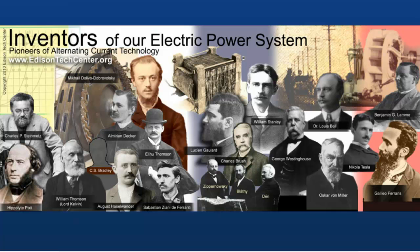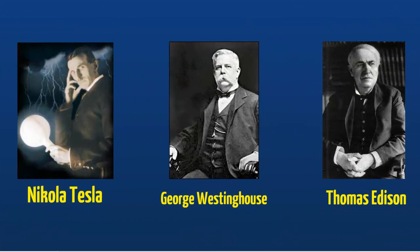Trying to detail the contributions of all these men goes well beyond the scope of this project, so I will concentrate on the three men responsible for the alternating current revolution in the United States of America. These three men were Nikola Tesla, George Westinghouse, and Thomas Edison. Tesla supplied the majority of the science and engineering. Westinghouse supplied the financial backing. And Edison supplied the conflict and the antagonism. There's quite a story behind the birth of AC in the U.S.